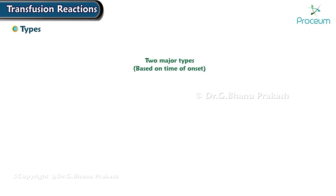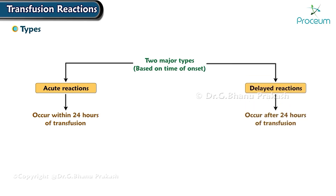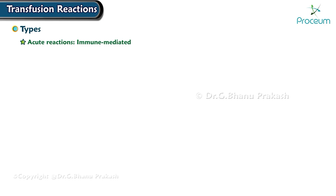Types of transfusion reaction: there are two major types based on time of onset — acute reactions, which occur within 24 hours of transfusion, and delayed reactions, which occur after 24 hours of transfusion. These reactions can be immune mediated or non-immune mediated.